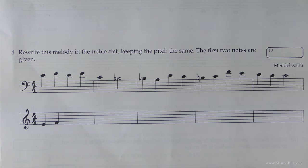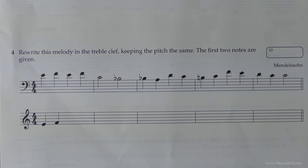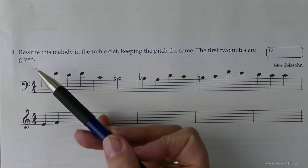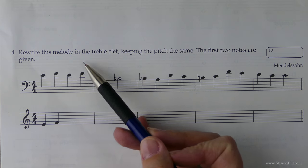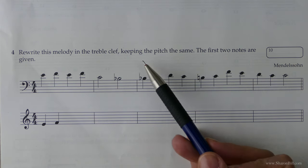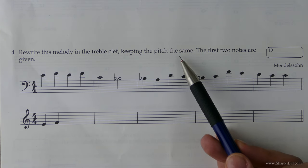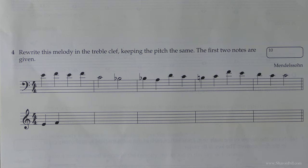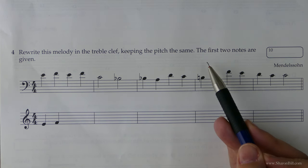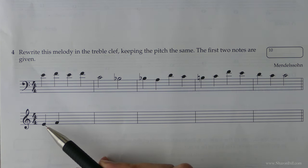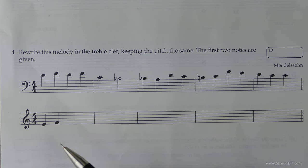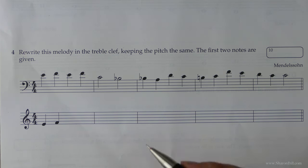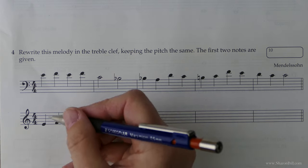Question 4 gives us a melody in the bass clef and we're asked to rewrite the melody in the treble clef keeping the pitch exactly the same. You've just got to be careful that you don't end up jumping octaves. Very generously they've given us the first two notes so really all the hard thinking is done. The clue is to keep relating back to middle C.